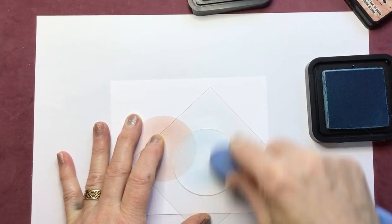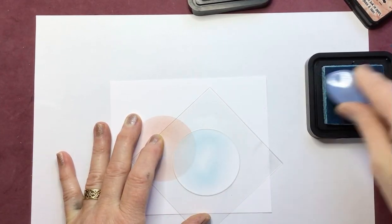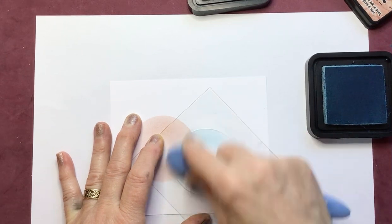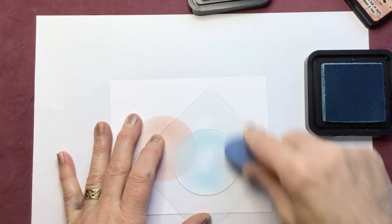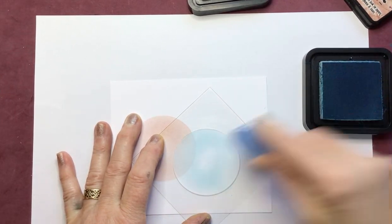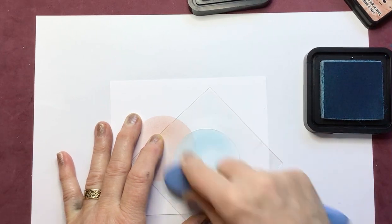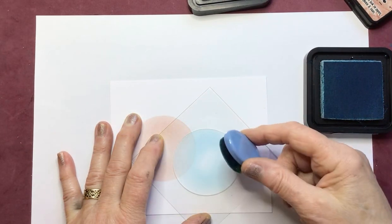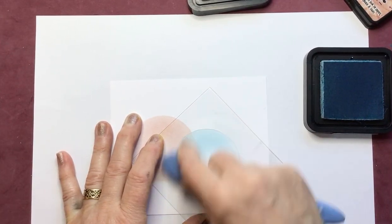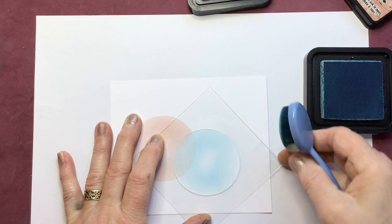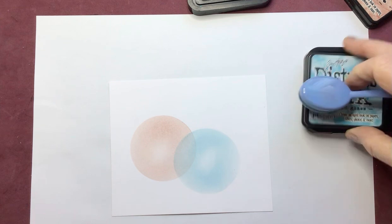Down we go and then again same thing, holding it tightly so the stencil doesn't move and doing a circle motion round and round. Not a very wet ink pad here but I'm really holding tightly onto the head of the brush and sort of giving it a bit of welly and really pushing it into the cardstock.